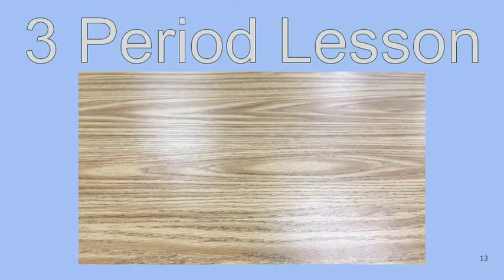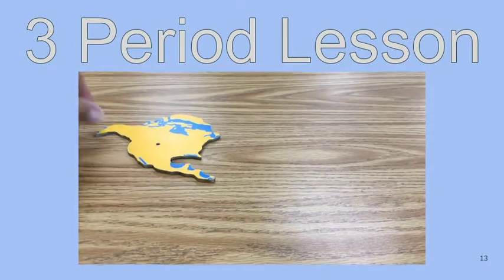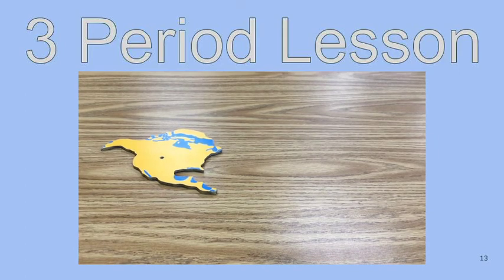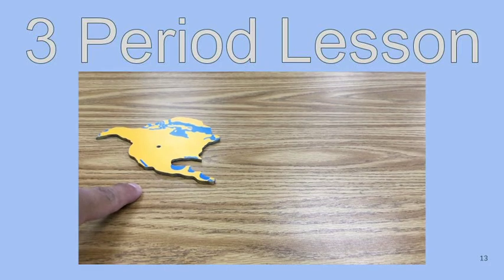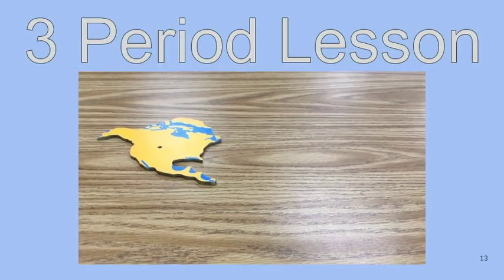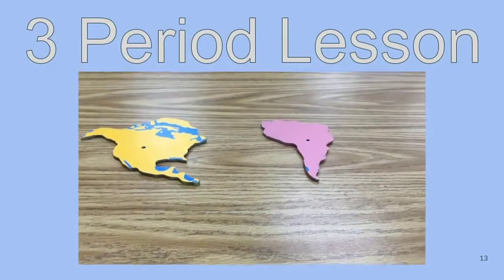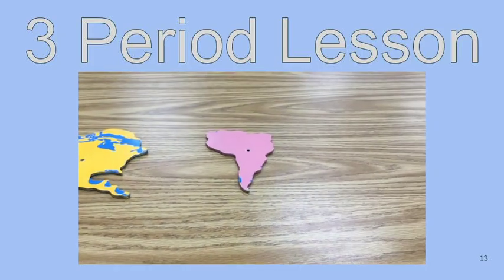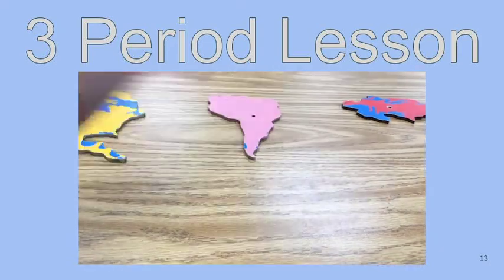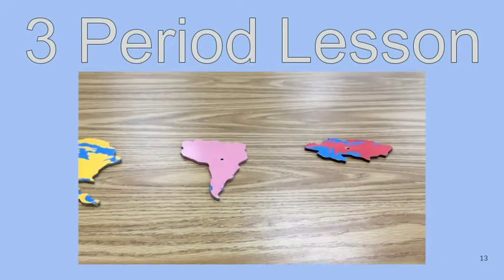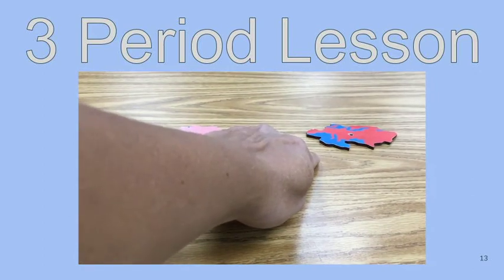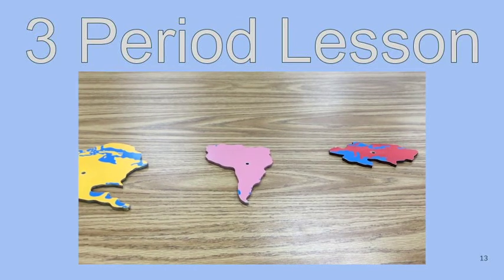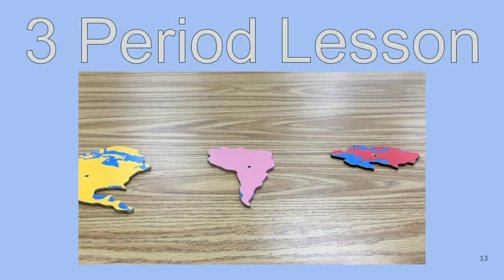When demonstrating the first period in a three-part lesson, we begin by identifying using the words 'This is.' For example: 'This is North America. This is South America. This is Europe.' Please note that as we are identifying each continent, not only are we saying 'this is,' but we are also pointing to the continent as we name it.